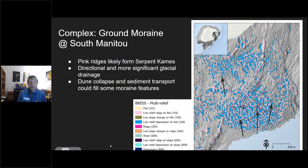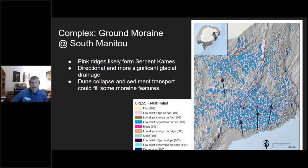Going further with the CMEX output, we can identify that some of these ridges are most likely serpent kames. They have a directional quality which indicates more significant glacial drainage. Around Sleeping Bear Dunes we often see a lot of sand filling in some of these regions — possibly sand collapse and sediment transport filling in moraine features that are more dominant across the bathymetric environment, though we're not completely sure.